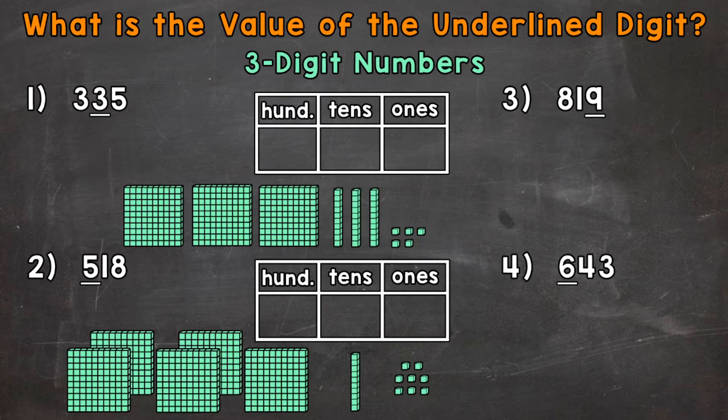So let's jump into number one, where we have 335. The three in the tens place is underlined, so we need to determine the value of that digit. Let's use the place value chart to the right to break this number down.